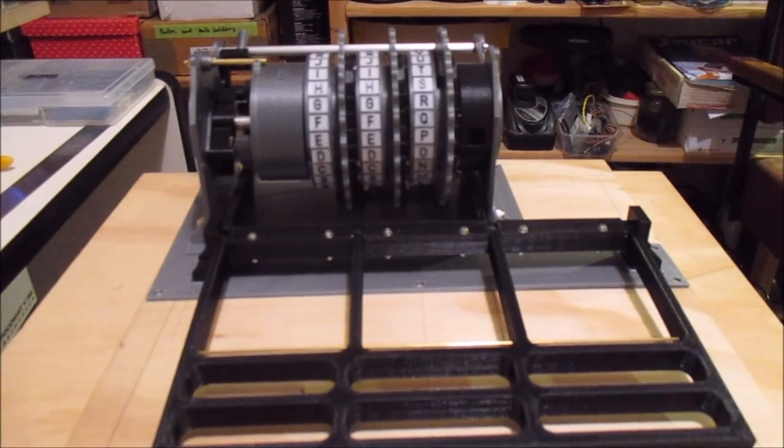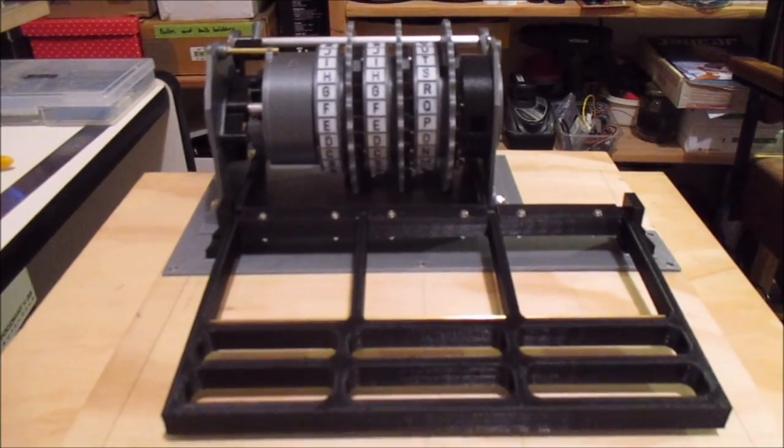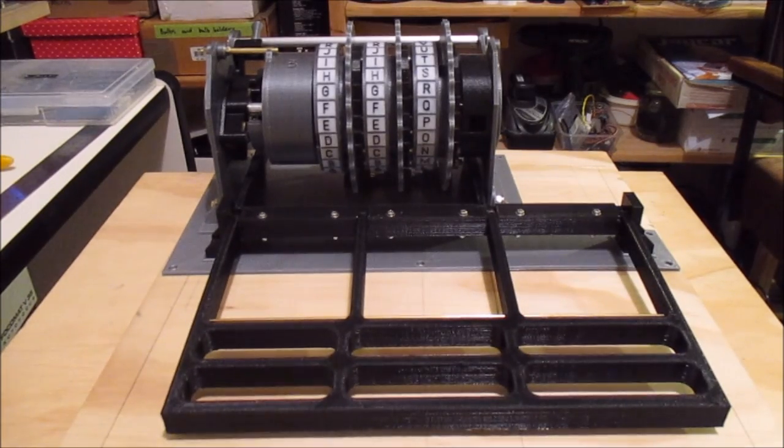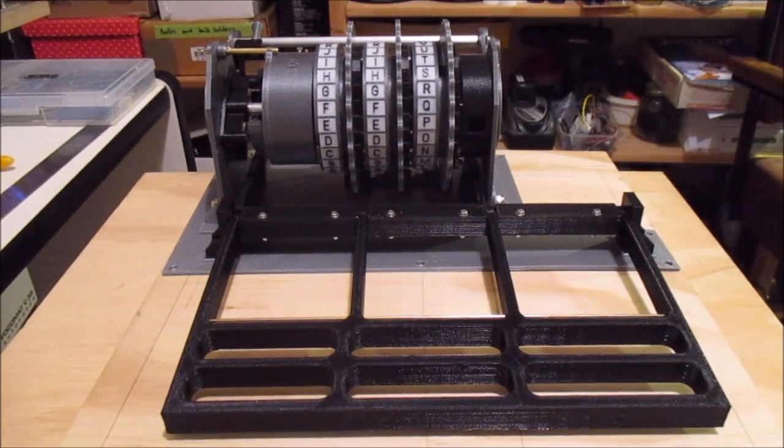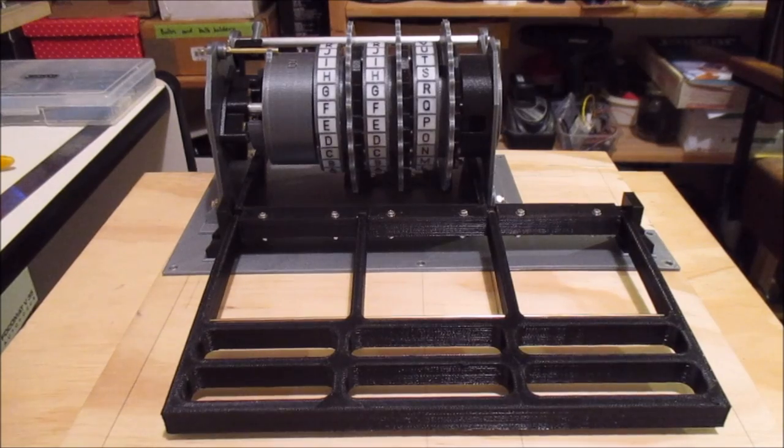The other thing I've been doing is figuring out how to do the keyboard. Now the original Enigma machine used sort of little metal contacts that the keys pressed on. There was quite a large number of these contacts and there was no easy way I could make those.